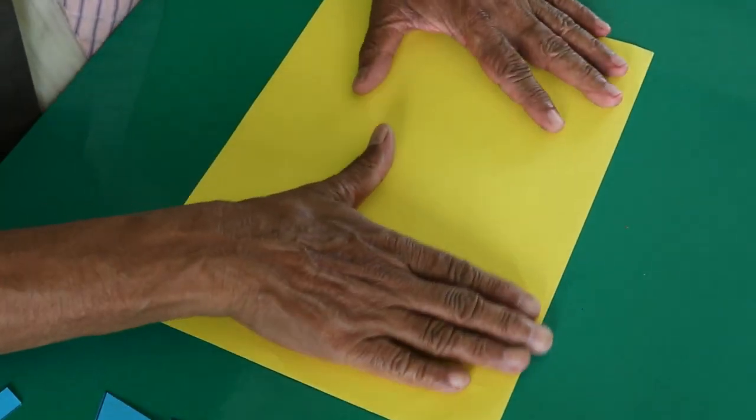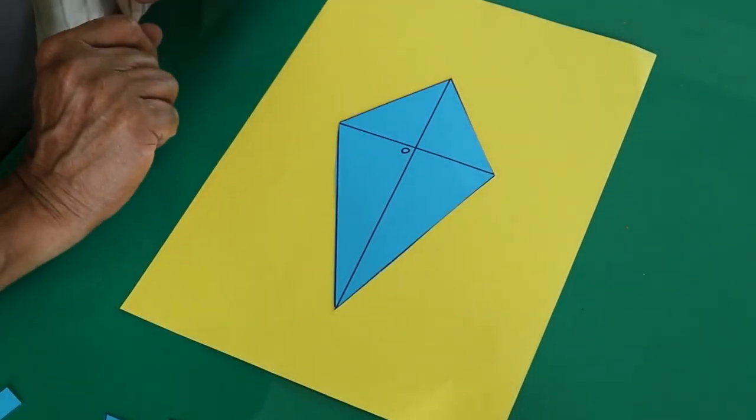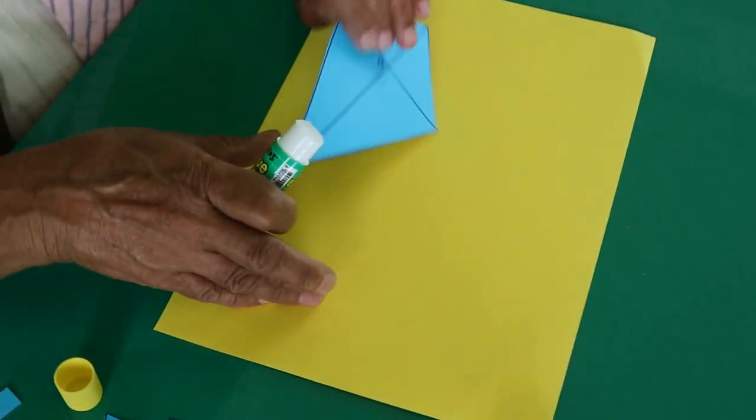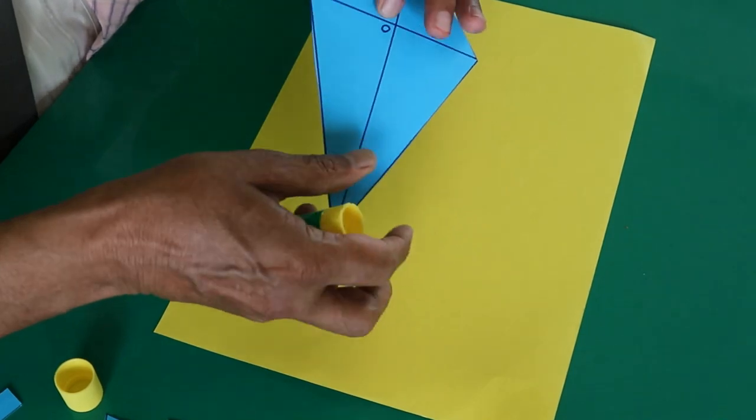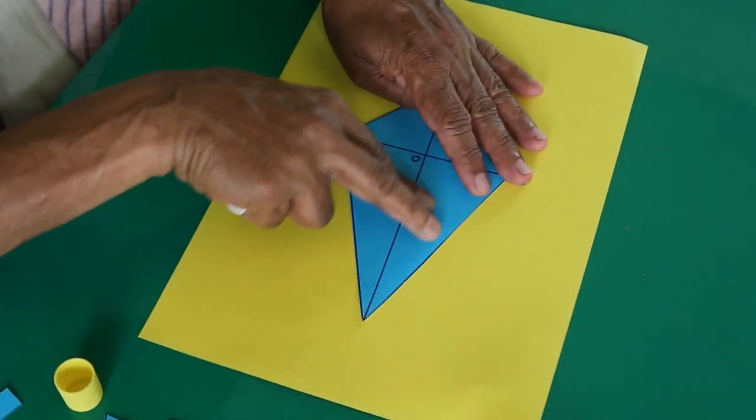Take a color sheet of paper, and on this paper paste this kite using glue stick. This is your kite. It is pasted here.